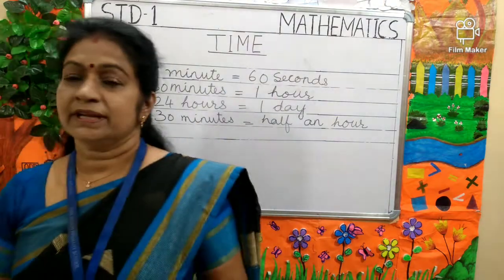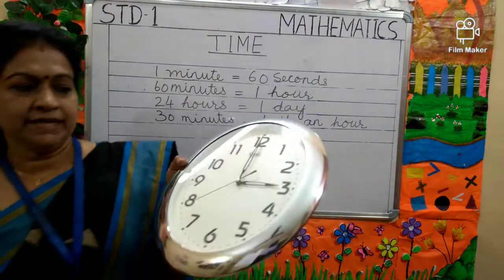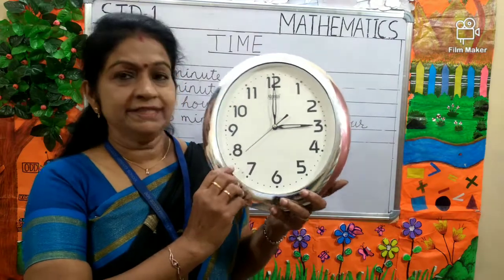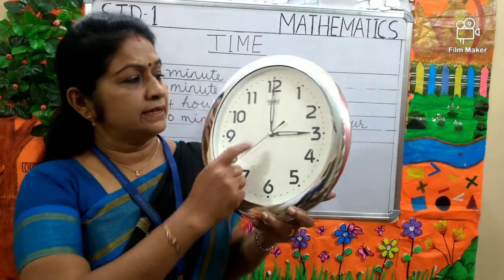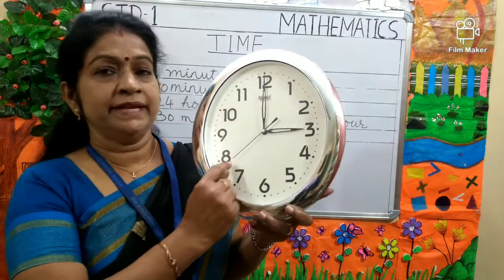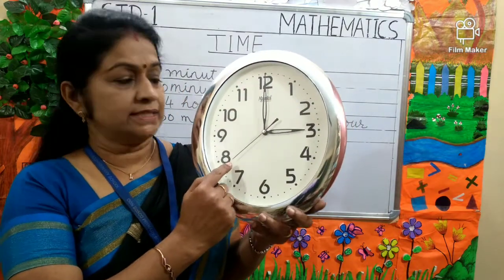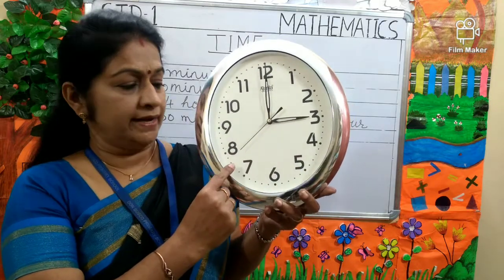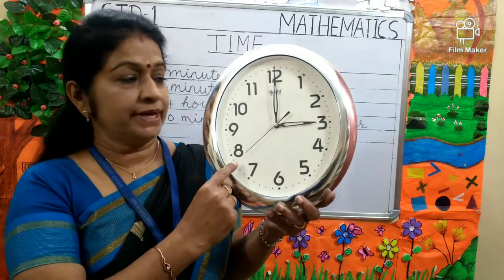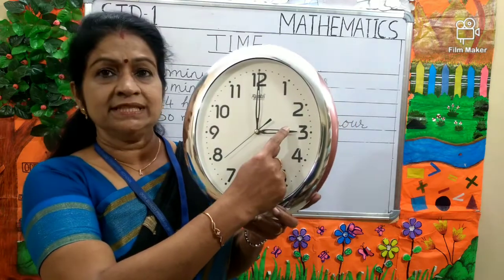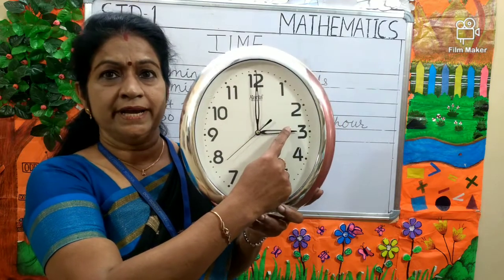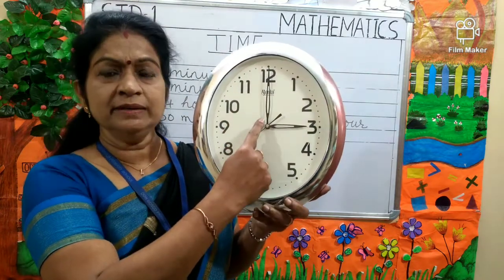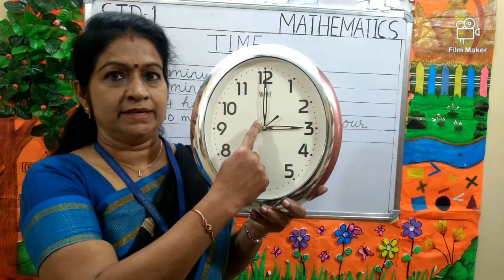Now, here is a clock. It has three hands. The thinnest one is the second hand. The shortest is the hour hand. And the longest is the minute hand.